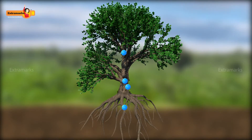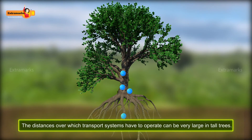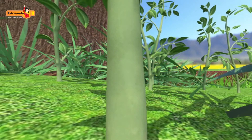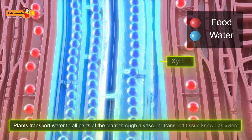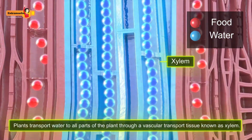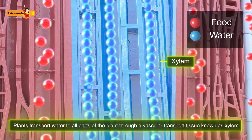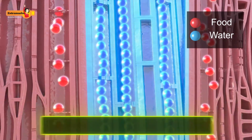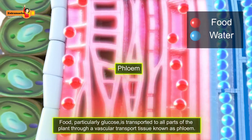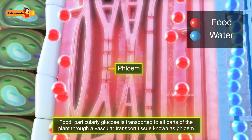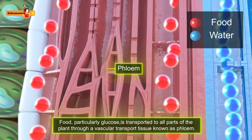However, it is interesting to note that the distances over which transport systems have to operate can be very large in tall trees. Two pathways are present in plants for transportation. Plants transport water to all parts of the plant through a vascular transport tissue known as xylem, while food, particularly glucose, is transported to all parts of the plant through a vascular transport tissue known as phloem.